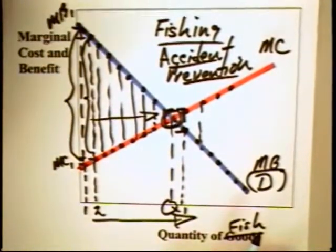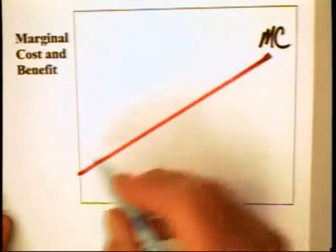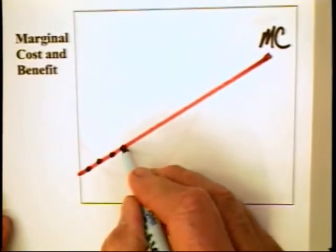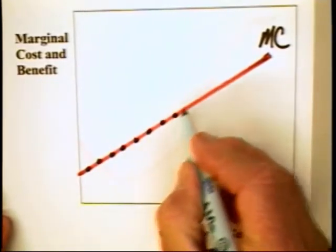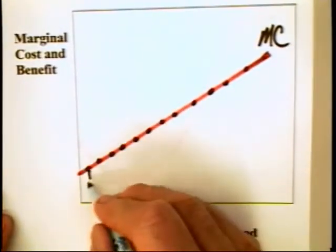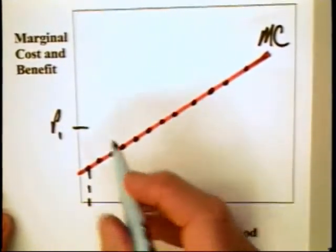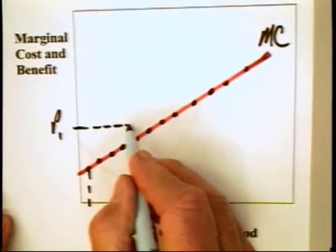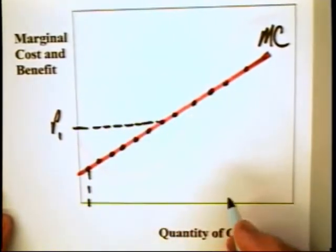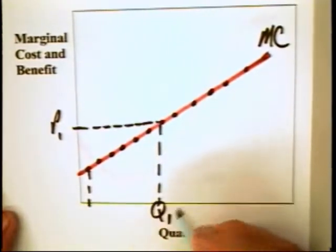Now, we can transfer this analysis to the business world, and we can assume that the marginal cost, again, is increasing all the way from unit one. In fact, if the price is P1, then the person is going to continue to produce this good until a quantity of Q1. Why?